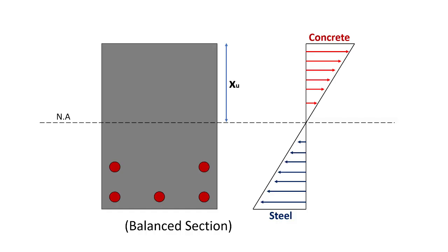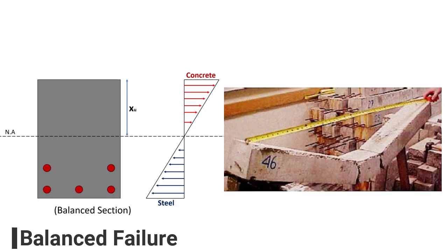If we talk about the balanced section, this type of section is designed in such a way that if we apply load on the member, the permissible strength of both the concrete and steel is achieved at the same time. In addition to that, both the materials will fail at the same time, and such a failure is known as balanced failure.